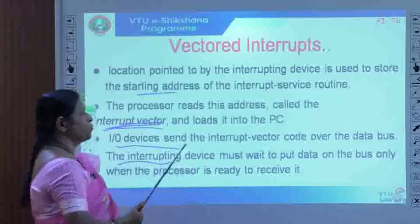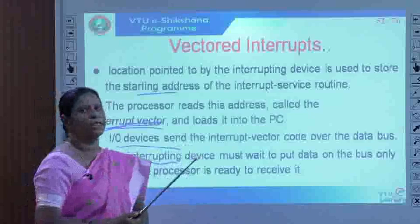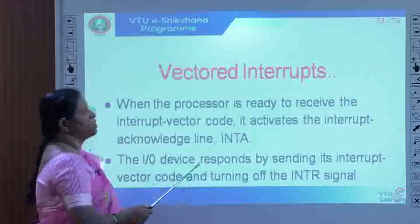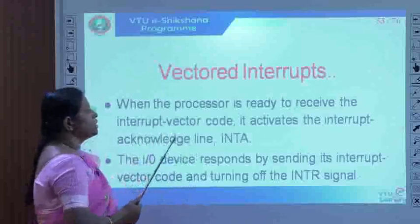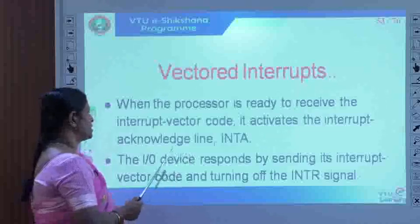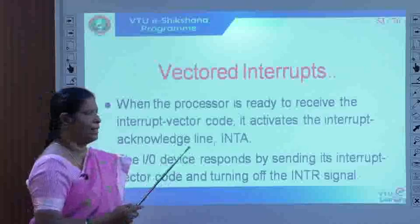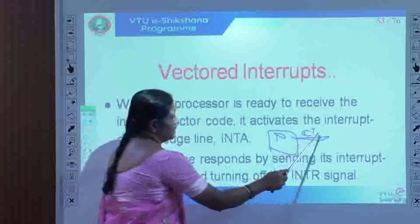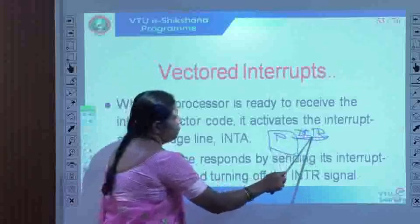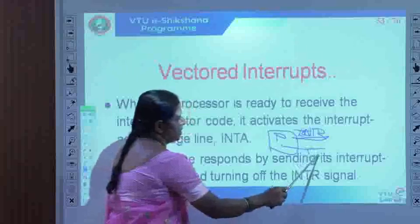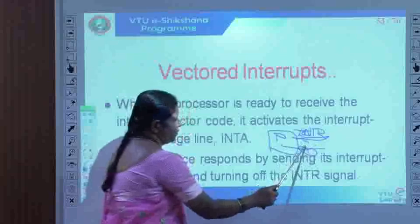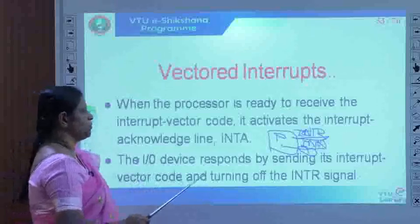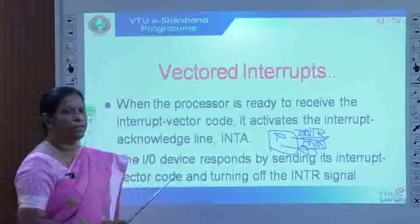The multiple requests can be handled using vectored interrupts. When the processor is ready to receive the interrupt vector code, it activates the interrupt acknowledge line (INTA line). The I/O device responds by sending its interrupt vector code and turning off the interrupt request line. Next is the concept of interrupt nesting. Before the processor starts executing the ISR, it disables interrupts from the device.